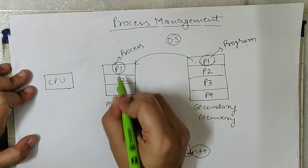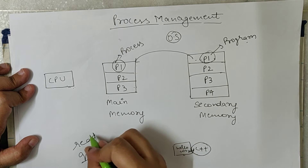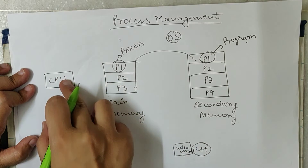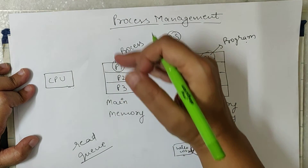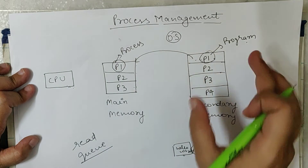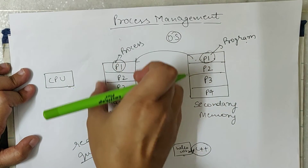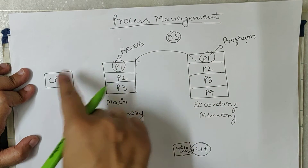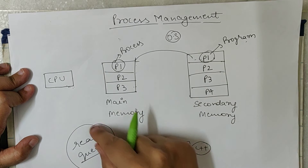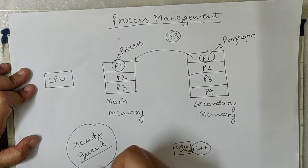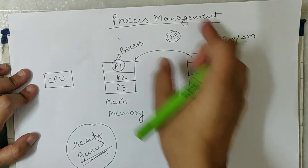All the processes in main memory are waiting for the CPU. We have a data structure called the ready queue. In this ready queue, all processes — P1, P2, P3 — are waiting in a line for the CPU. Once programs reside in the main memory they are known as processes, and the CPU picks them up one by one for execution. They are all waiting inside the ready queue, which is a data structure. All of this is managed by the operating system.